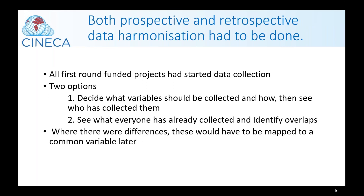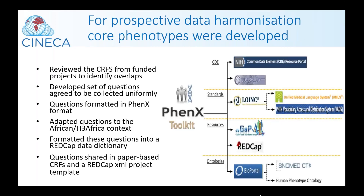The phenotype harmonization working group worked on data standards and harmonization, developing core phenotypes to collect, creating tools around those core phenotypes, and making retrospective harmonization recommendations for data. Both prospective and retrospective data harmonization had to be done. There were first-round funded projects which had already initiated phenotype data collection, and there were two options: decide what variables should be collected and how, and then see who had collected them — or see what everyone had already collected and identify overlap. Where there were differences, these would have to be mapped to a common variable later.